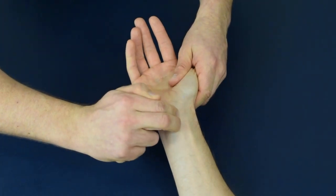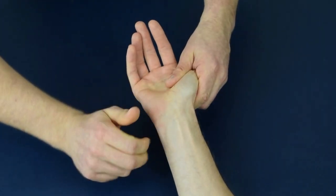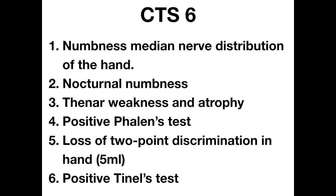Number six is a positive Tinel's test. The presence of all of these findings is a firm indicator of carpal tunnel syndrome. The diagnosis becomes less certain if fewer of these tests are positive. We also have a video on the non-surgical management of carpal tunnel syndrome that you may find helpful.